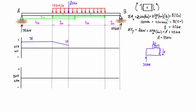Drawing just to the right of the point load, we extend the free body diagram to include the 20 kN point load pressing down. So we have 40 kN going down and 35 kN going up. For static equilibrium the shear force must be 5 kN pointing up, which is opposite the positive sign convention, so the shear here is negative 5 kN — dropping down to negative 5. The drop here is equal to the magnitude of the point load.